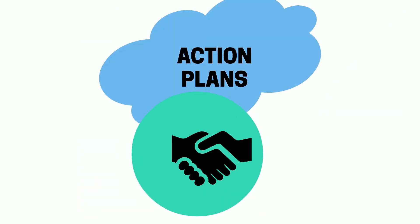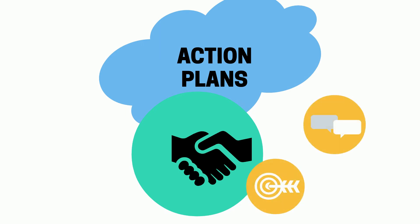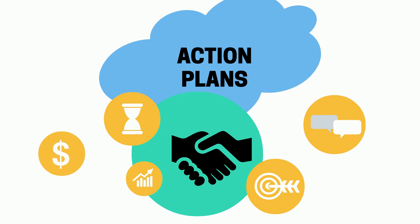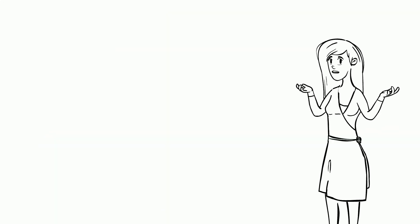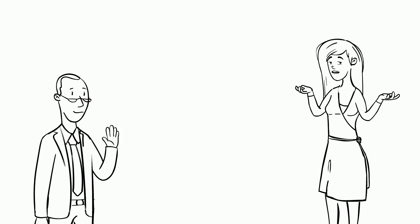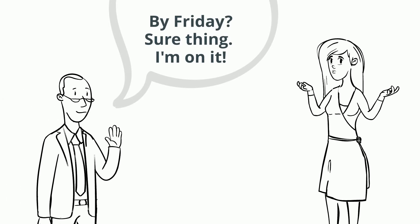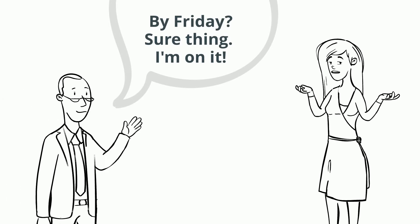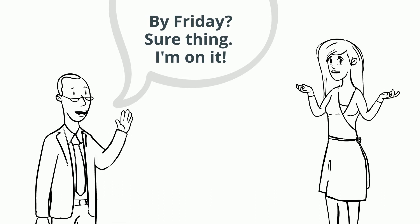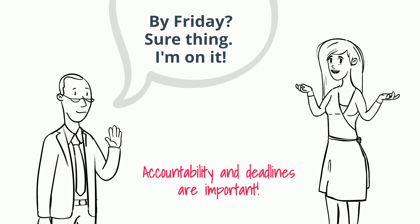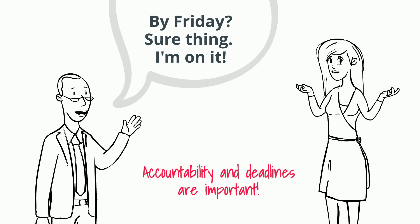Action plans. Action plans are simply the steps to take to meet a specific goal. There may be one or many steps for each goal. Each step should have an assigned responsibility, reporting and deadlines. It's very hard to meet goals without a written action plan for which a person has accountability and deadlines.